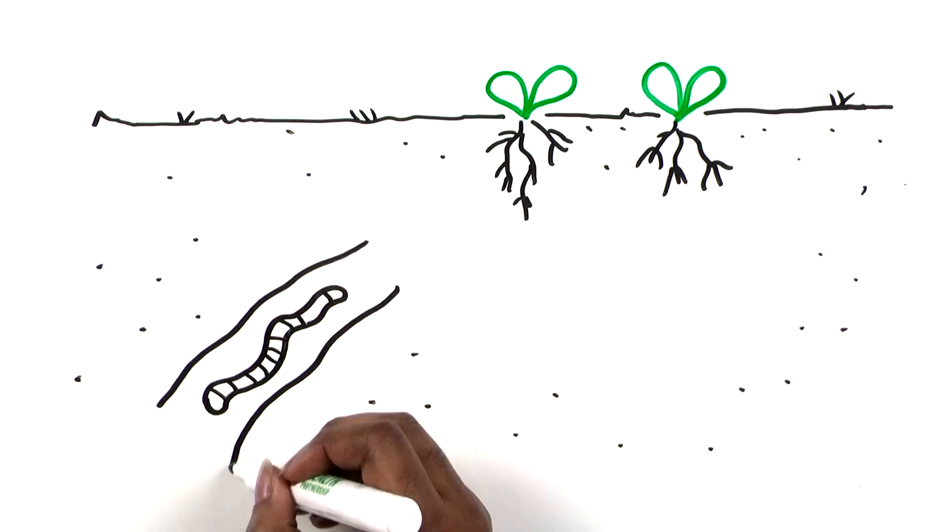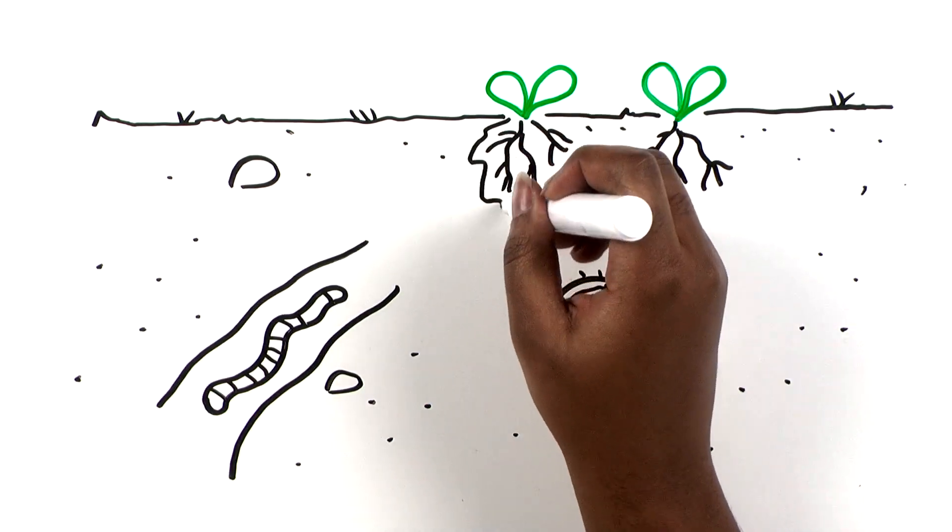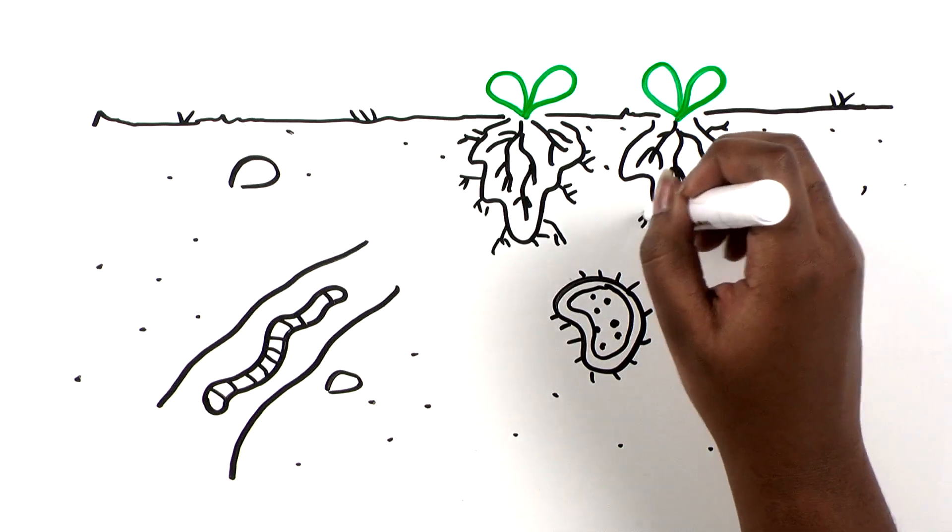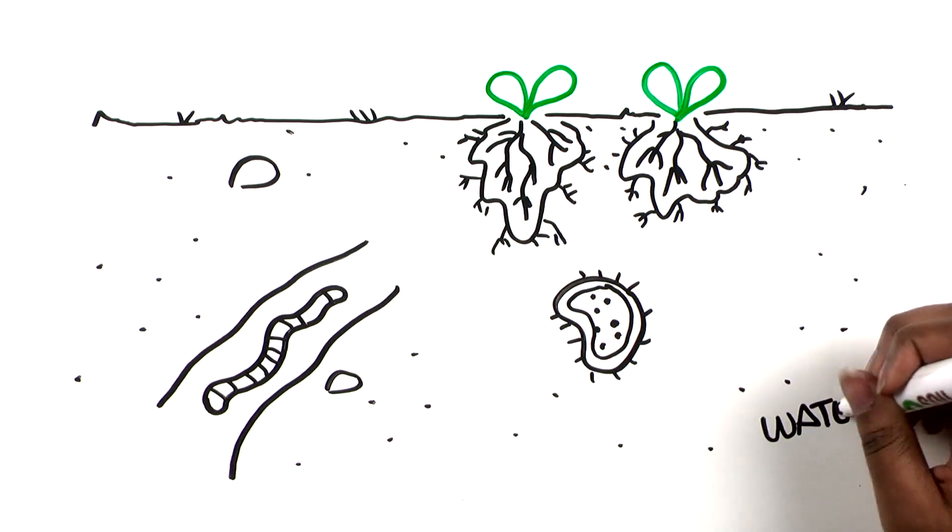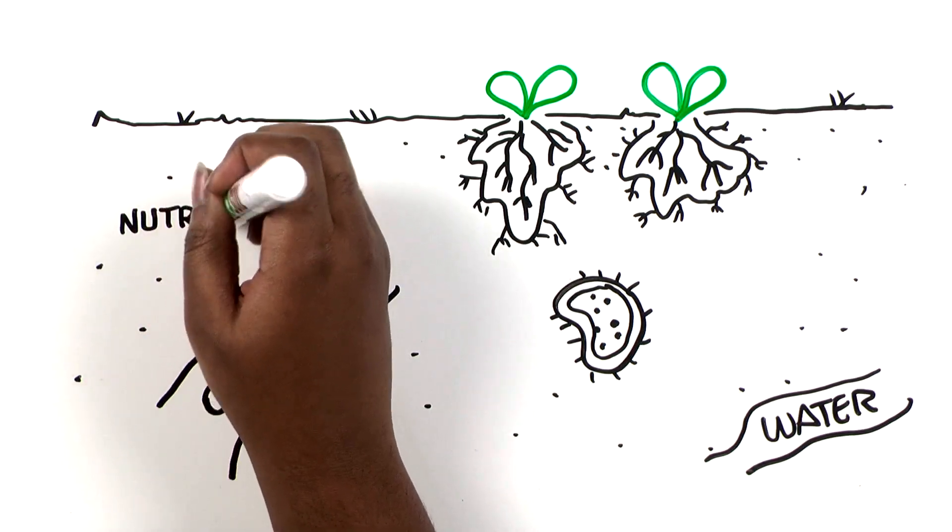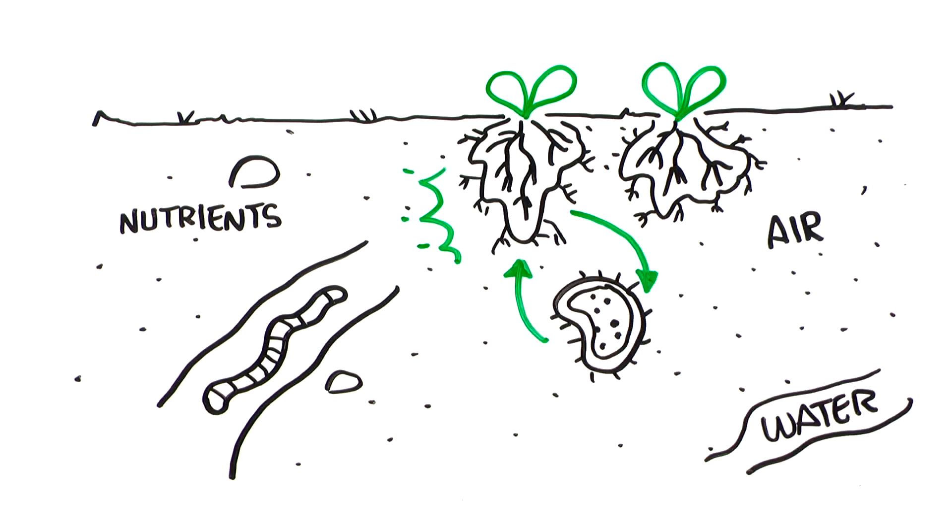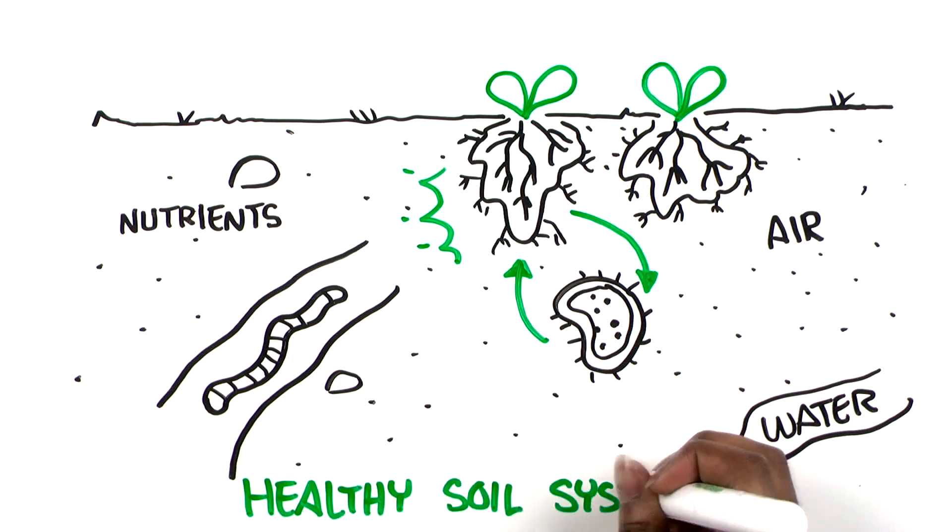Why are those organisms like worms, bacteria, and fungi important? They are the workers in a sophisticated economy, feeding plants and creating pathways for water. In return, the organisms need plants and roots year-round to feed them. That makes for a healthy soil system.